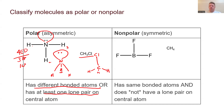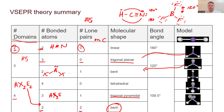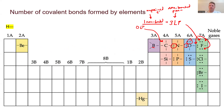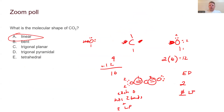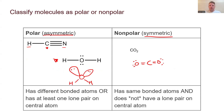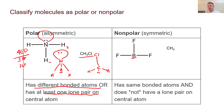BF3 has the same bonded atoms and does not have a lone pair on the central atom — three bonded pairs from boron to fluorine, and no lone pairs on boron. Boron is an exception to the octet rule, forming only three bonds. So BF3 is symmetric and nonpolar. These are the different ways in which you can classify a molecule as being polar or non-polar.